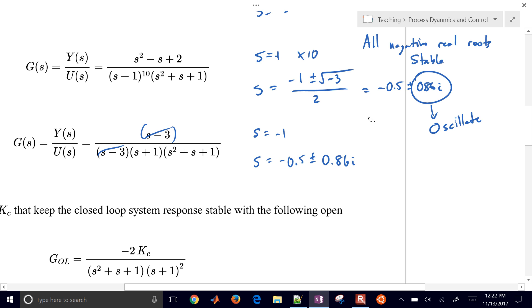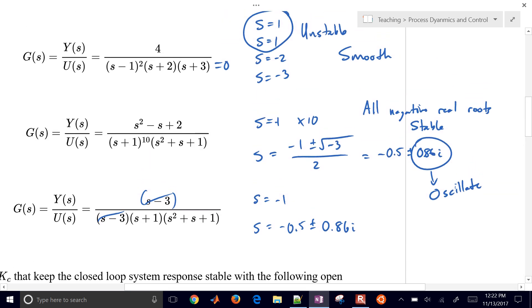So it's going to oscillate. And because all the real components of that, we have negative 1 and negative 0.5, because those are negative, then it's going to be stable.